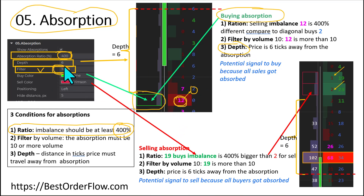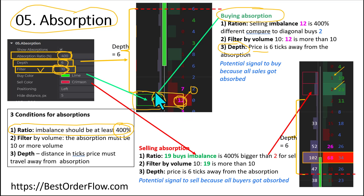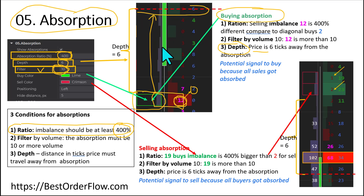And the third condition is depth, which we can select right here — it is six ticks. So the price from here should travel at least six ticks. This is the price line in order for our absorption to become visible as a signal to us.